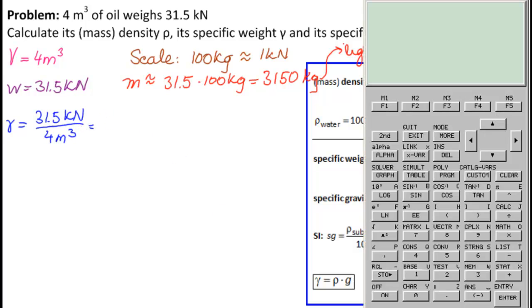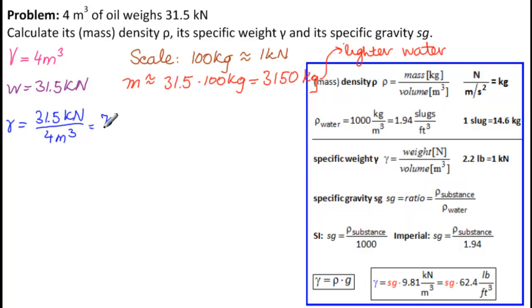And get a calculator. So we have 31.5, and we're going to write it in newtons. So we have EE3 divided by 4 equals 7,875. 7,875 newtons per meter cubed. So that's the answer to what is gamma.